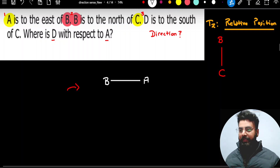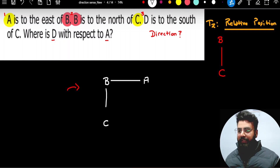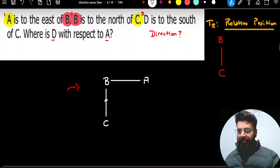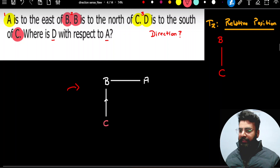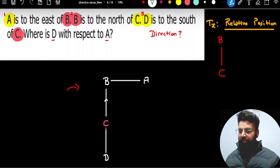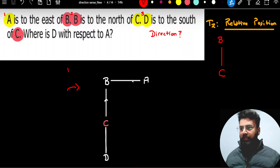Let me draw C here, because then only I can show B to the north of it. Read the last statement: D is to the south of C. Here also, D's position is dependent on point C. In my diagram, I know where point C is, so I have to go to the south of it and place point D there. After using these three pieces of information, this is the distance diagram I am able to make.